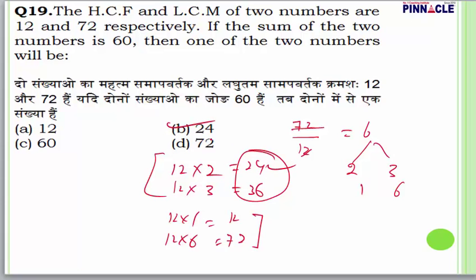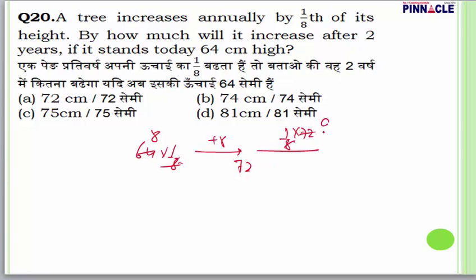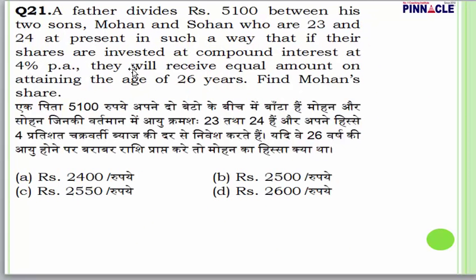Question number 20: A tree increases annually by 1/8 of its height. If it stands today at 64 cm, by how much will it increase after 2 years? Year 1: 64 × 1/8 = 8, new height = 72. Year 2: 72 × 1/8 = 9, new height = 81. After two years the height is 81 cm. Answer is D.